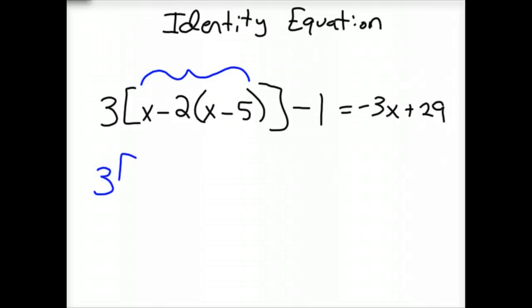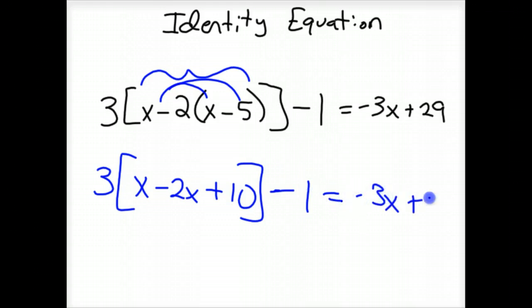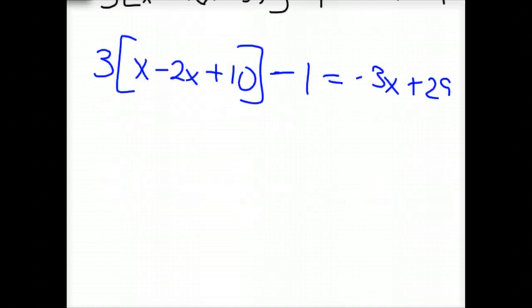So distribute through what you need to. So you'd have 3(x - 2x + 10), because I'm taking negative 2 and distributing it through there, and then minus 1 equals -3x + 29. So what we do from here is now I combine what I can combine.